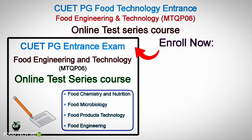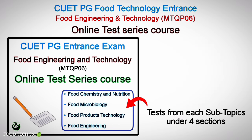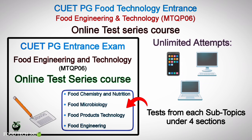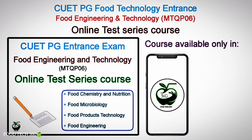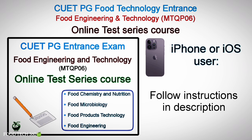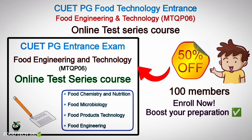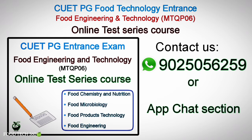FoodTech360 has launched an online test series course for CUET PG Food Engineering and Technology entrance exam, exactly as per the current syllabus. You will get test series from all four sections and subtopics under each section. You can attend this test unlimited times from your phone, desktop, or laptop. This course is available only on the FoodTech360 Android app — download it now from the Google Play Store or through the link in the description. For iPhone or iOS users, follow the instructions given in the description. We are providing this course at 50% discount for the first 100 members, so enroll now and boost your preparation. For further queries and guidance, contact us through WhatsApp or the app chat section.